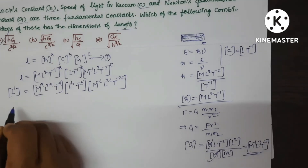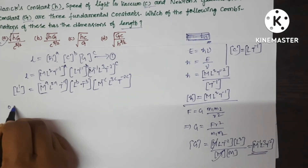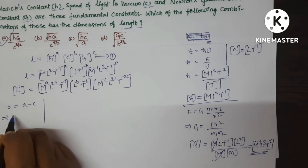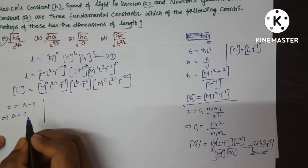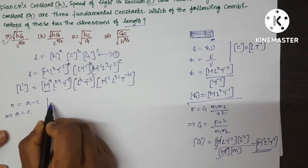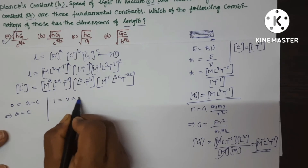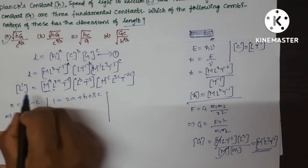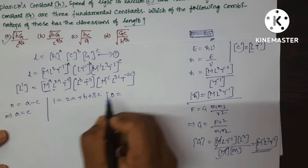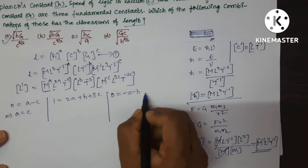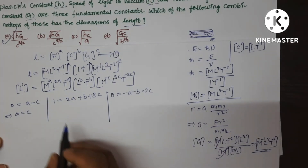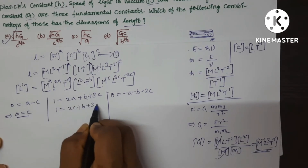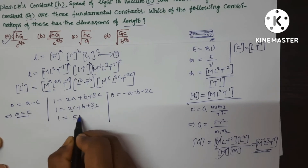Compare both sides. For M terms: 0 = A − C, so A = C. For length: 1 = 2A + B + 3C. For time: 0 = −A − B − 2C. Substituting A = C: 1 = 2C + B + 3C = 5C + B.